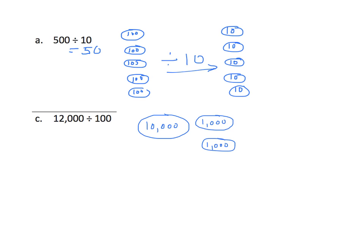I'm going to divide each of those by 100. So what do we have here? We have 10,000 divided by 100, that gives us 100. And I have thousands, two of them, each divided by 100. And 1,000 divided by 100 is 10.